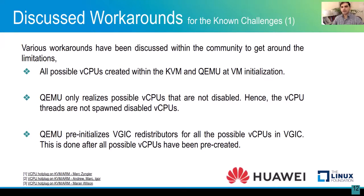QEMU pre-initializes VGIC redistributors for all possible VCPUs in the VGIC. Because the VGIC has a requirement that this be done as part of the VM initialization process, QEMU does that and all redistributors are created along with the VCPUs at VM init time. There have been certain discussions related to these which you can refer to via the links provided.